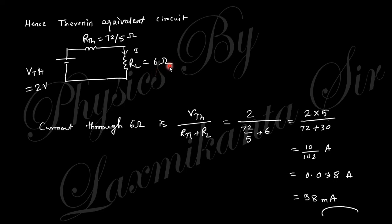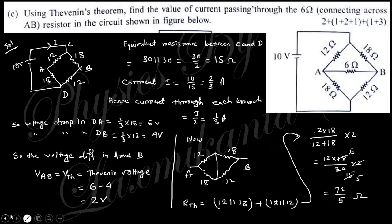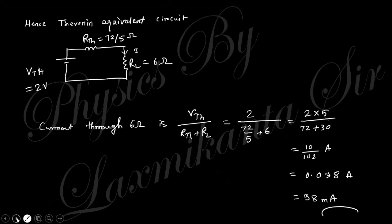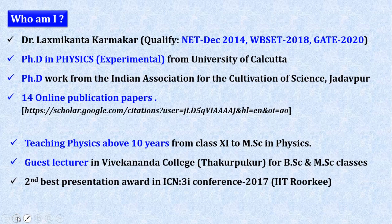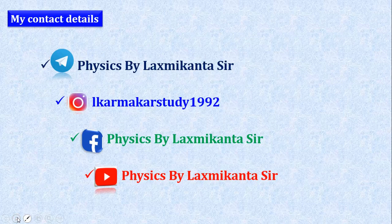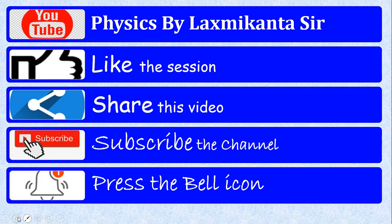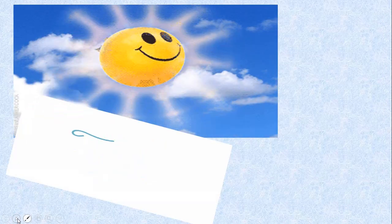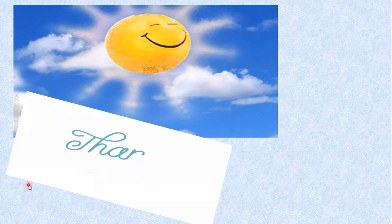With the Thevenin equivalent circuit — Thevenin voltage and Thevenin resistance — the current through the load resistance R_L is total voltage divided by total resistance. That gives the current through the 6 Ω resistor. If there are any doubts, please comment below. This is my contact information and YouTube channel. Take care — we will meet in the next video. Thank you.